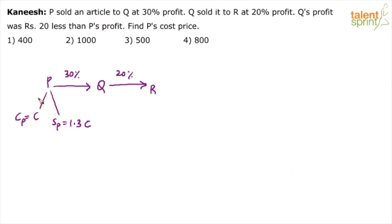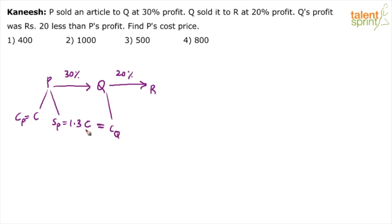Cost price of P is C, and selling price of P is 1.3C. Now, cost price of Q will be equal to the selling price of P — selling price of the first person becomes the cost price of the next person. So cost price of Q is equal to 1.3C.